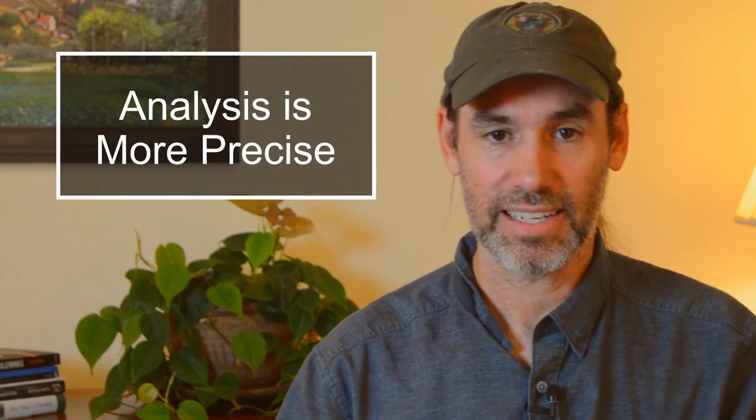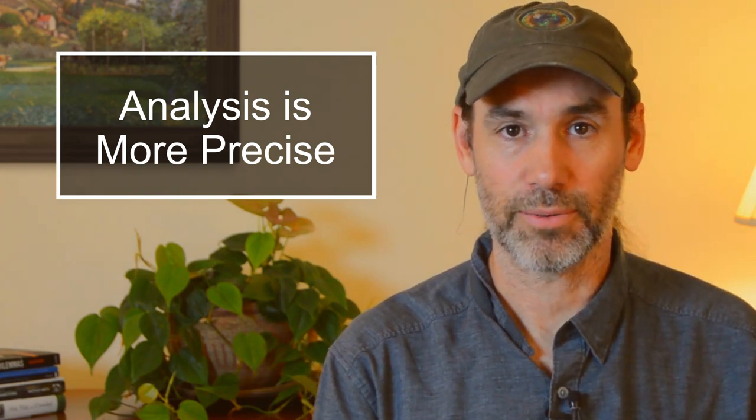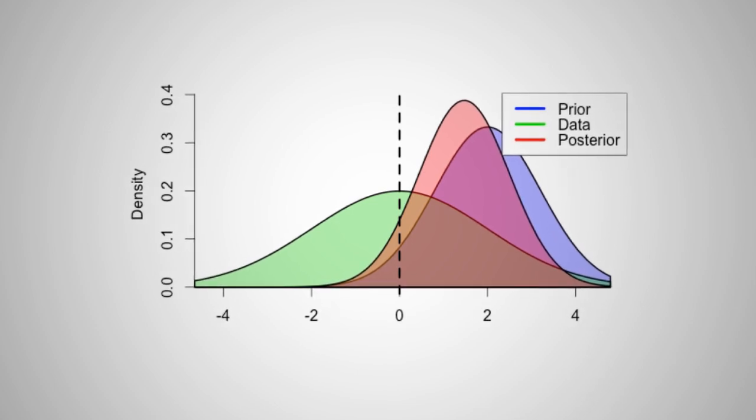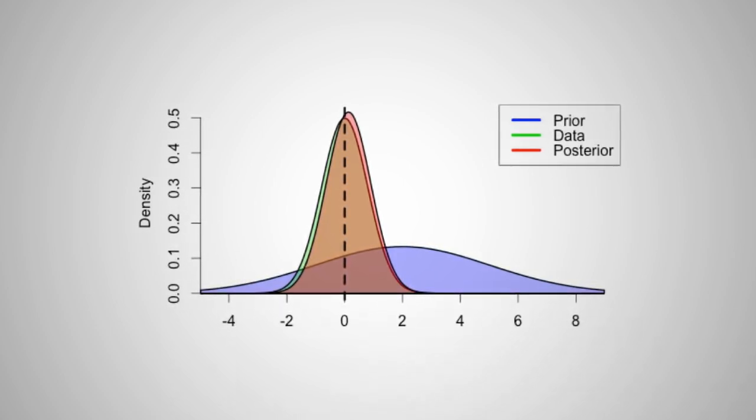This leads to two important intuitive pieces of understanding that are mathematically exact for this simple problem but carry through conceptually to more complex problems. The first is that when we perform the analysis and update the forecast with new information, that updated forecast will always be more precise, because we sum the precision of the data with the precision of the forecast. The second intuition is that the contribution of information from the forecast and the contribution from the new data are each weighted by their uncertainties. So if I have data that is very noisy, it's only going to have a little bit of influence on the forecast. By contrast, if I have data that is very precise but a model that is very uncertain, then we're going to see the analysis pulled very strongly in the direction of that high-quality data.